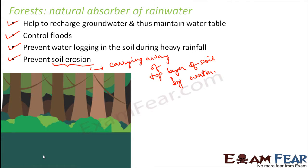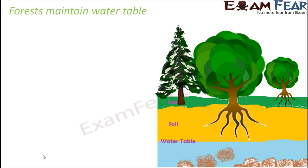Let us understand how forests help to recharge groundwater and maintain the water table. The water table is the level below the ground from where an abundant amount of water is present in the spaces between rock particles. Below the soil, as you go deeper, you reach a level where sufficient water is present — this is called groundwater, and it is fetched using borewells, tube wells, and hand pumps.